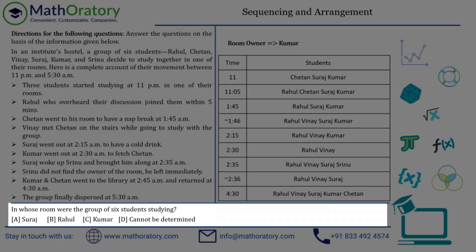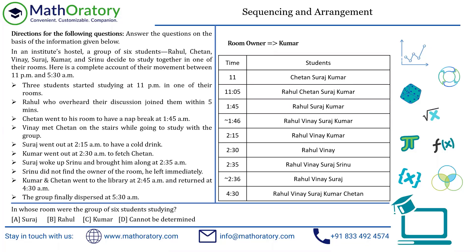In whose room were the group of six students studying? This is the owner of the room, which we took note of earlier — Kumar is the owner of the room. So again, the answer is option C.